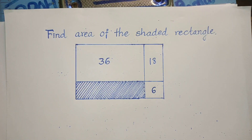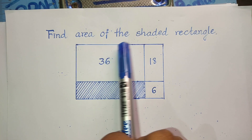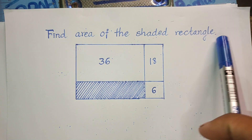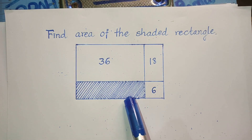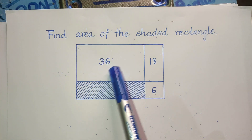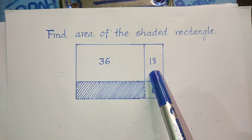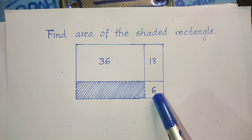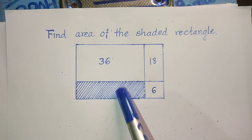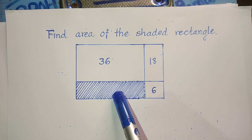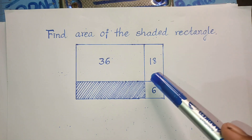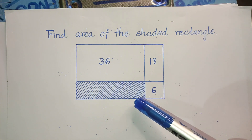Hello everyone, welcome to my YouTube channel. Today I have one problem: find the area of the shaded red shape. This shape has an area of 36, an area of 18, and an area of 6. Now find the area of this shaded shape.